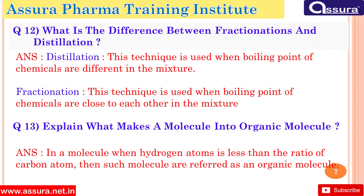Explain what makes a molecule an organic molecule. In a molecule, when the number of hydrogen atoms is less than the ratio of carbon atoms, such molecules are referred to as organic molecules.